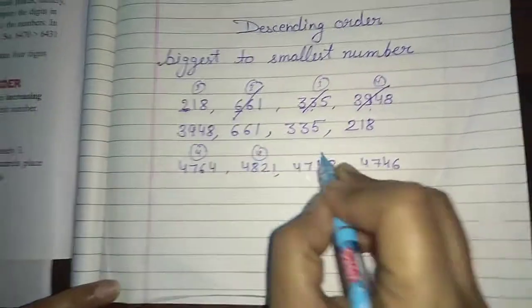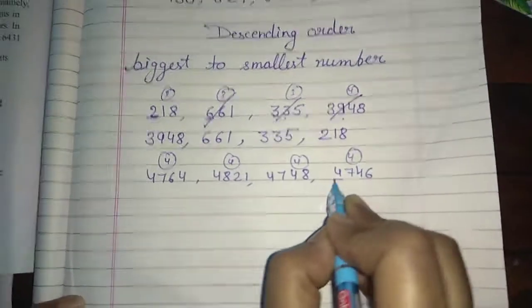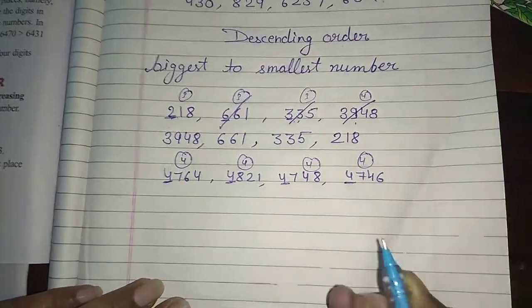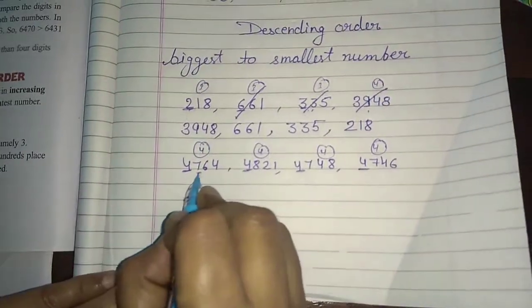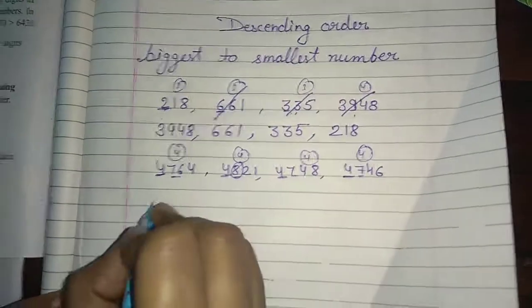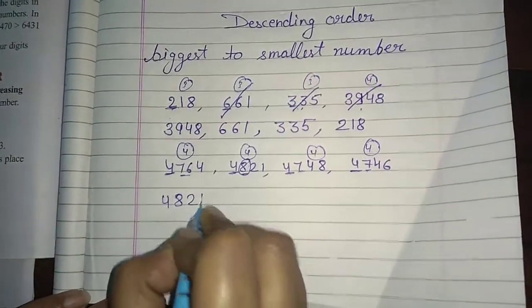Next example, in which your thousands, all have four digits. All have what? Four digits. Now all numbers are what? Same. So now we will see which numbers? Hundred. Hundred has seven, eight, seven, seven. So eight is our biggest number. So four thousand eight hundred twenty-one.